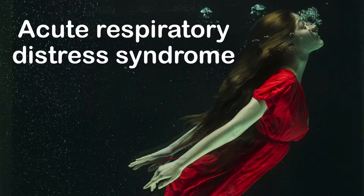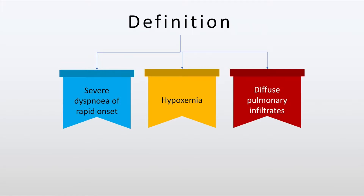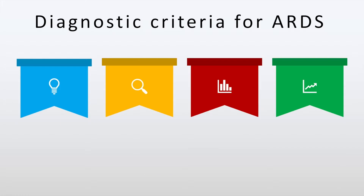Acute Respiratory Distress Syndrome is defined as severe dyspnea of rapid onset along with hypoxemia and diffuse pulmonary infiltrates resulting in respiratory failure. The diagnostic criteria for Acute Respiratory Distress Syndrome, sometimes called the Berlin criteria, consists of oxygenation which we will discuss in the next slide.